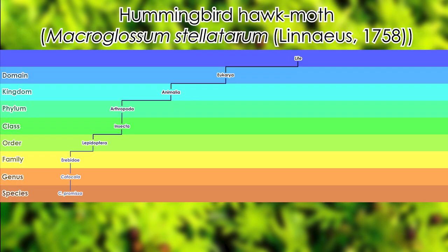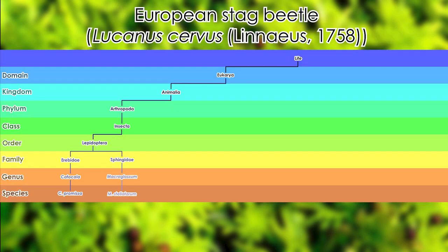Second, we have the hummingbird hawk-moth, Macroglossum stellatarum (Linnaeus, 1758). Domain Eukaryota, Kingdom Animalia, Phylum Arthropoda, Class Insecta, Order Lepidoptera, Family Sphingidae, Genus Macroglossum, and Species M. stellatarum. Next, we have the European stag beetle, Lucanus cervus (Linnaeus, 1758). Domain Eukaryota, Kingdom Animalia, Phylum Arthropoda, Class Insecta, Order Coleoptera, Family Lucanidae, Genus Lucanus, and Species L. cervus.